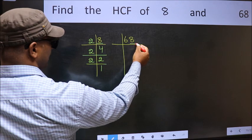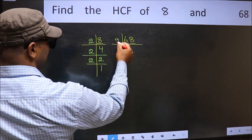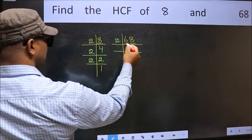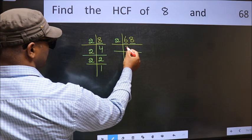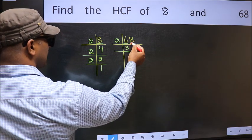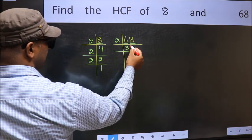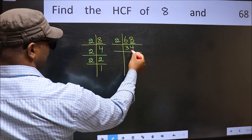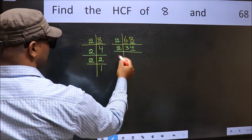Now the other number. Last digit 8, even so take 2. First number 6. When do we get 6 in 2 table? 2 times 3 is 6. The other number 8. When do we get 8 in 2 table? 2 times 4 is 8. Now last digit 4, even so take 2.